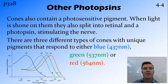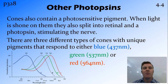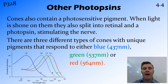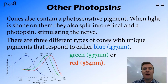There are also photosensitive pigments in the cones, and there are three types found here. In general, we refer to these as photopsins — light opsins — and they have a specific wavelength which causes them to split into opsin and retinal. There are three types of cones: blue at 437 nanometres, green at 537 nanometres, and red at 564 nanometres.